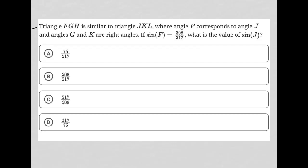This question says triangle FGH is similar to triangle JKL, where angle F corresponds to angle J, and angles G and K are right angles. To start off with, I'm going to use a strategy called plug-in picture, which basically says any time a question describes something that can be drawn, I'm going to go ahead and draw it.